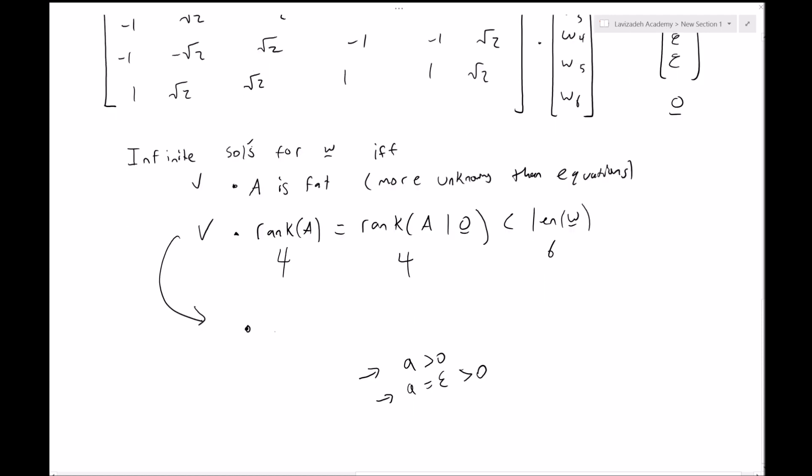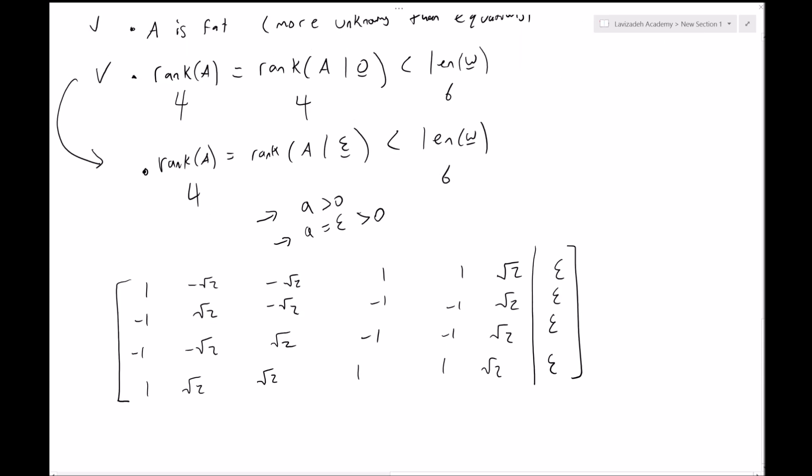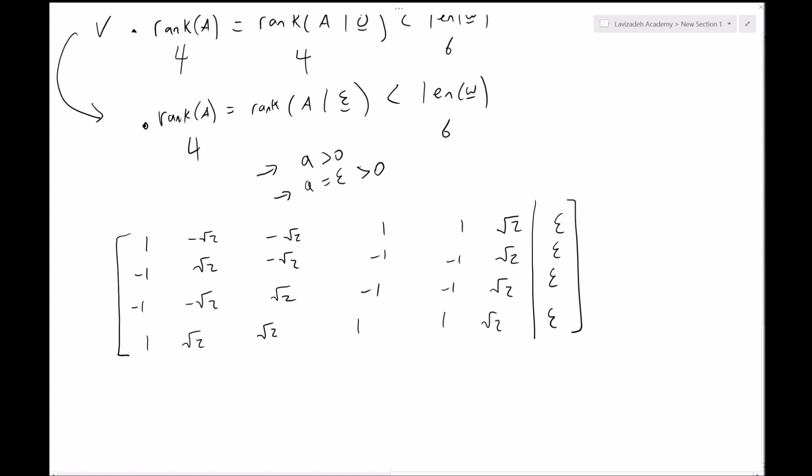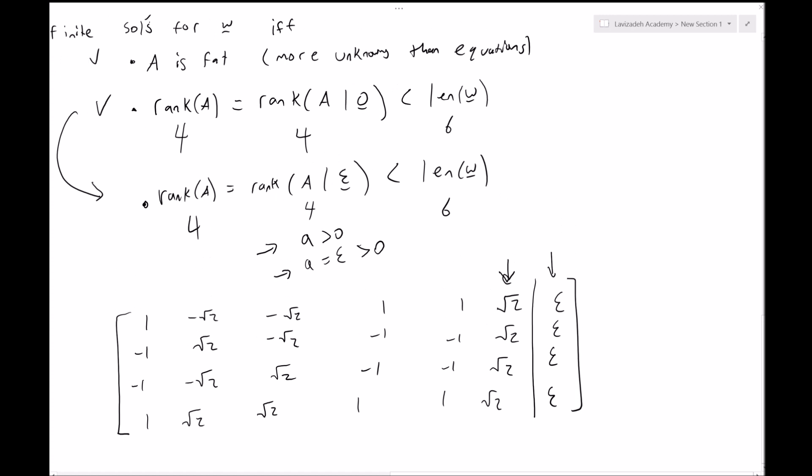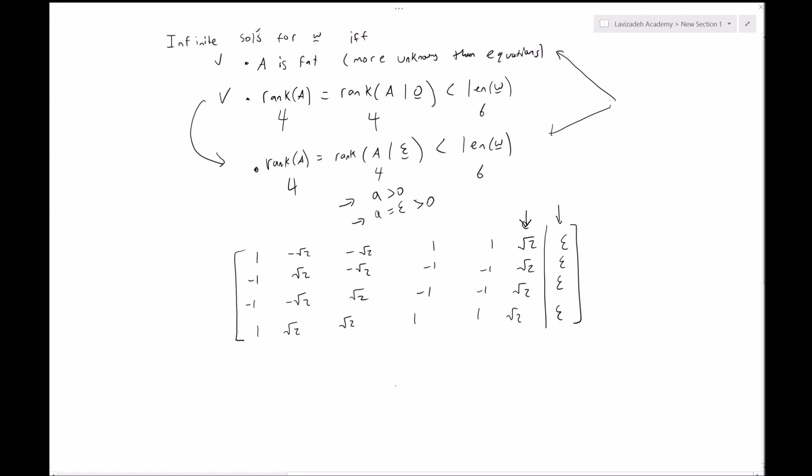Great. This property becomes that the rank of A equals the rank of A augmented with epsilon. All right, so this is still six and this is still four. So here's our augmented matrix. If you find the rank of this matrix, you're going to find that it's also four, and that's because, I mean, if you think about it, this is collinear with this, so it's not changing the span of the matrix.